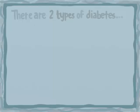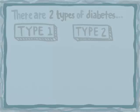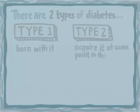There are two types of diabetes: type 1 and type 2. People who have type 1 diabetes are born with it. People who have type 2 acquire it at some point in their lives.